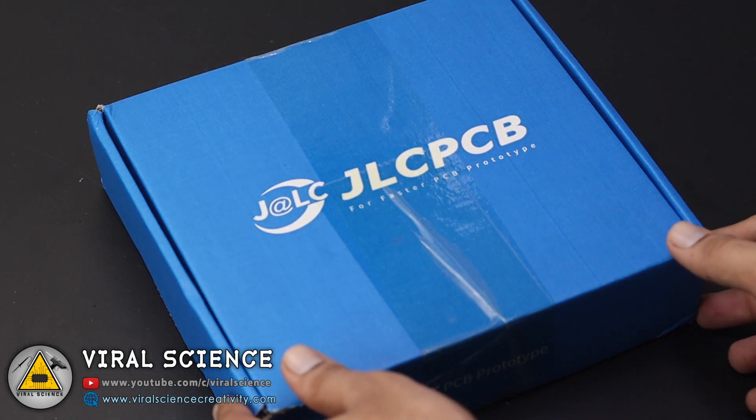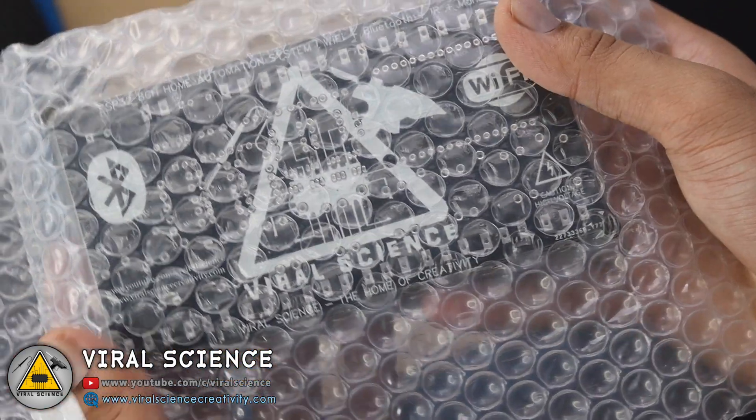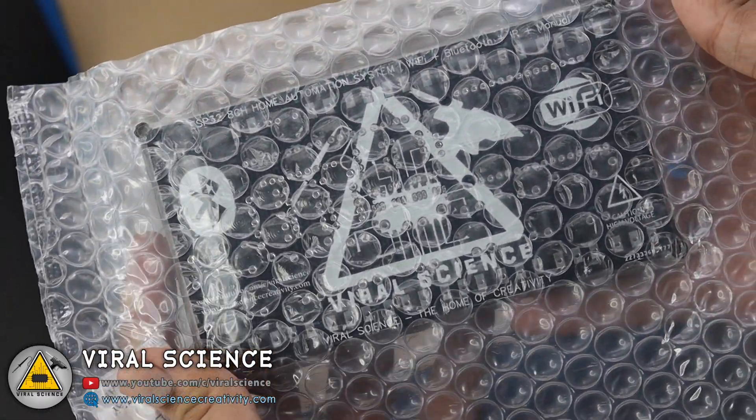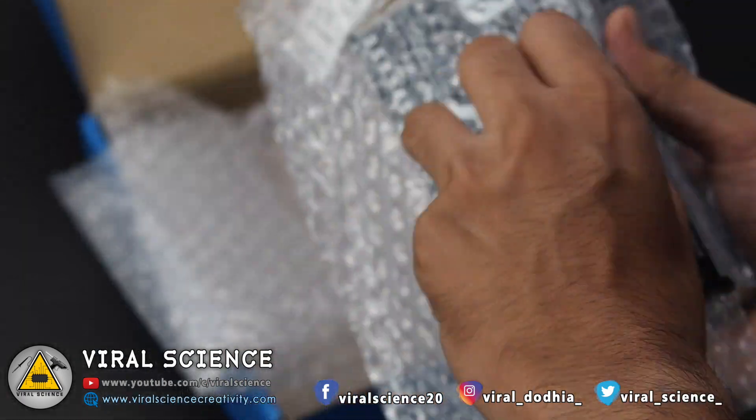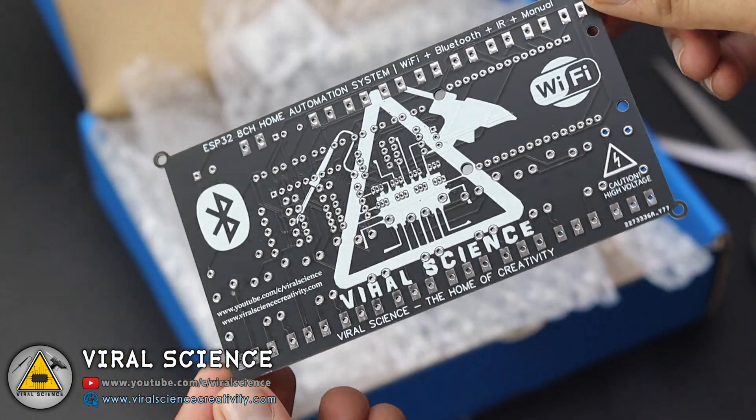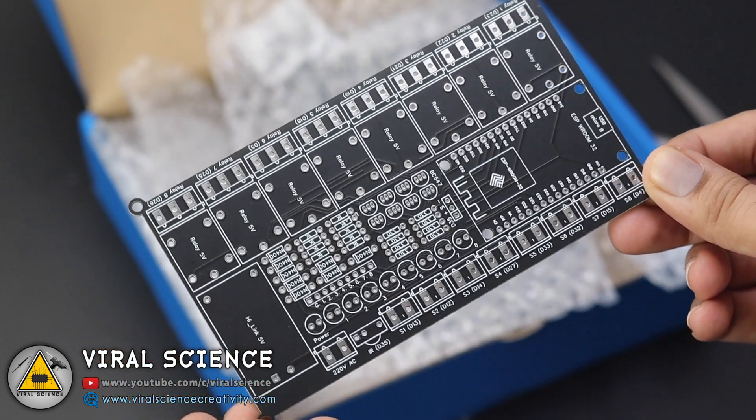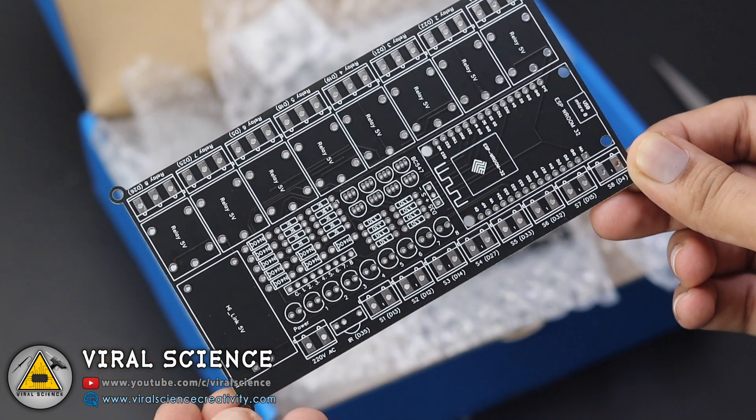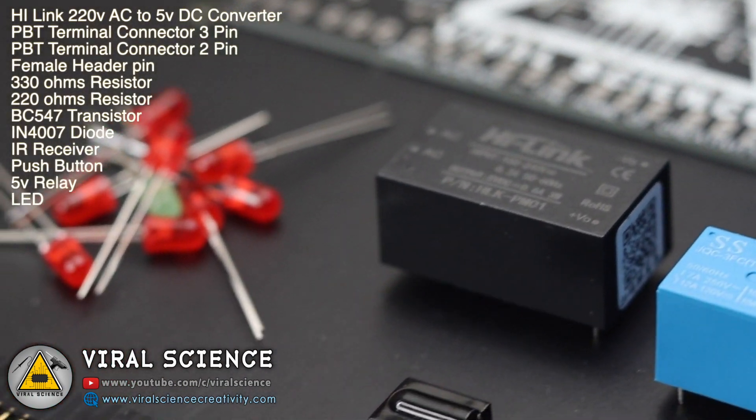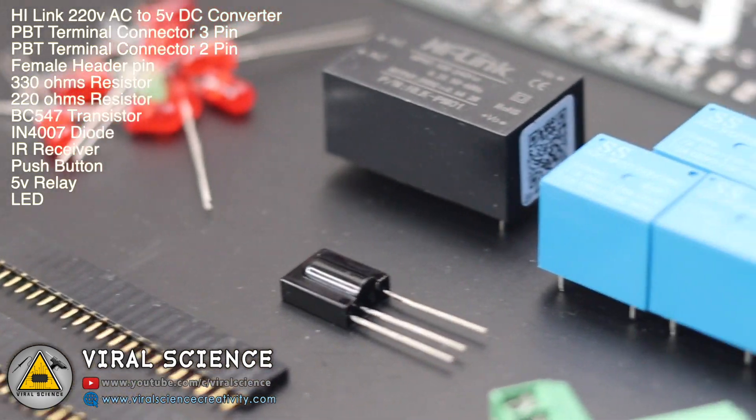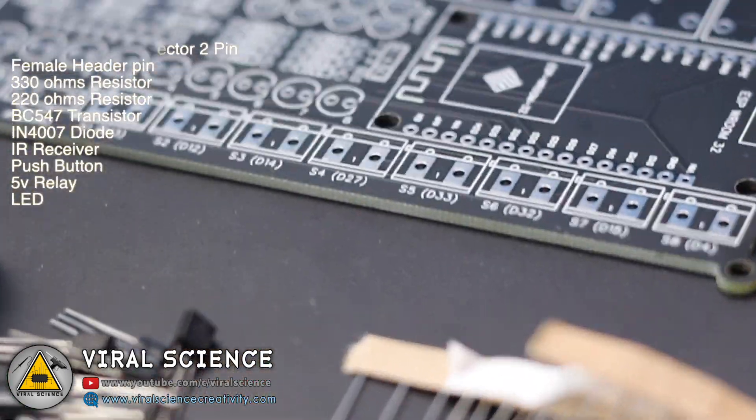In a few days I received my PCBs which were nicely packed inside this box. As you can see the quality of PCB looks very good. So now we will quickly collect all the components which are required for this PCB. I've listed them here and after getting all this we will assemble these components on our PCB board and start the soldering process.